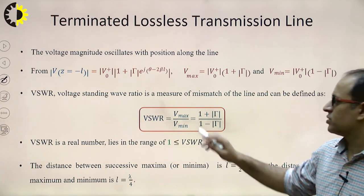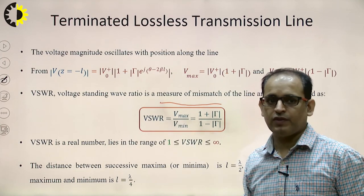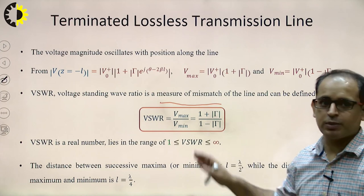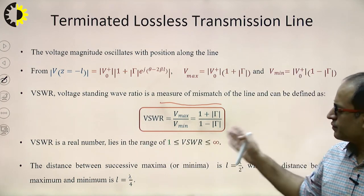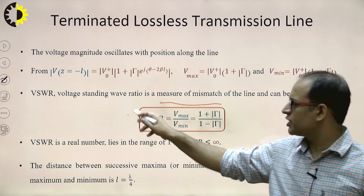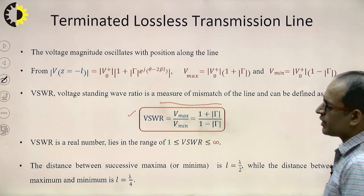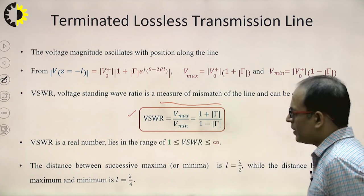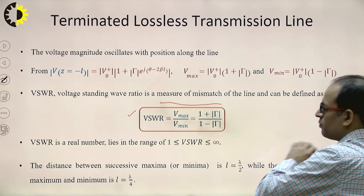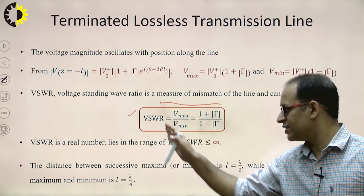The standing wave ratio (SWR) is a measure of the mismatch on the line, defined as VSWR = Vmax/Vmin = (1 + |Γ|)/(1 − |Γ|). It represents the ratio of maximum voltage amplitude to minimum voltage amplitude on the line, and ranges from 1 to infinity.